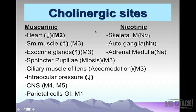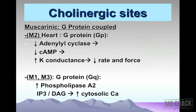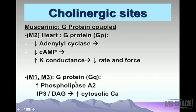Muscarinic receptors are mostly G protein-coupled receptors. The M2 receptor in the heart uses Gi protein, which leads to decreased adenylyl cyclase activity, decreased cyclic AMP, and increased potassium conductance — all leading to a decrease in rate and force of contraction. The M1 and M3 receptors are also G protein-coupled, but use Gq protein, stimulating phospholipase C, increasing inositol trisphosphate (IP3) and diacylglycerol (DAG), leading to increased cytosolic calcium.